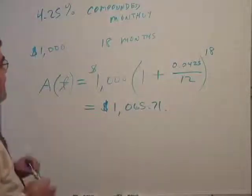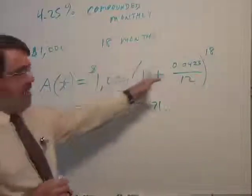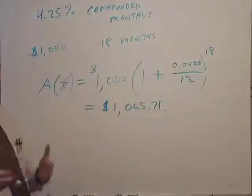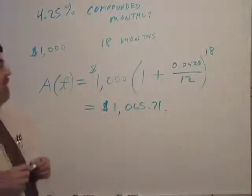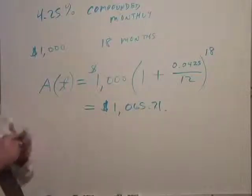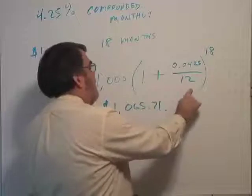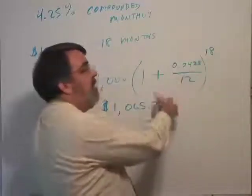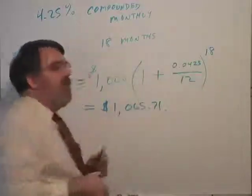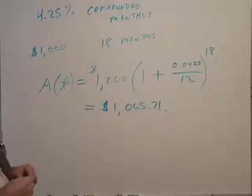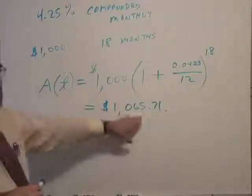Okay. So this is kind of a more complicated calculation, but you should try that on your calculator and see if you can get this. And again, you can do this in steps. For example, do this calculation inside the parentheses, hit equal, raise it to the 18th power, hit equal, multiply it by a thousand, hit equal. But keep all the decimal places on your calculator when you do this and you'll get the best accuracy.